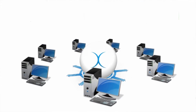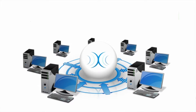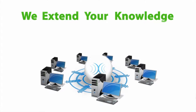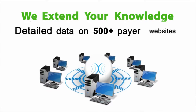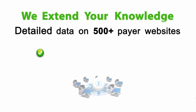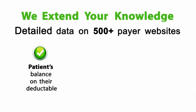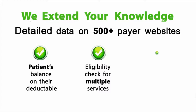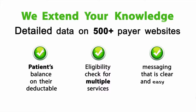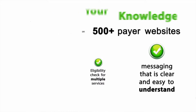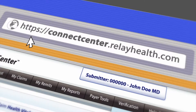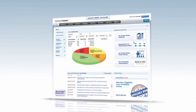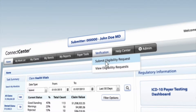Despite the desire to get this information electronically from the payer, some payers may only indicate that the patient has insurance. This creates added work for staff to call or log on to payer websites to get the answers they need. Relay Health can help get you current and actionable patient eligibility. We extend your knowledge beyond basic EDI by assimilating detailed data found on more than 500 payer websites.